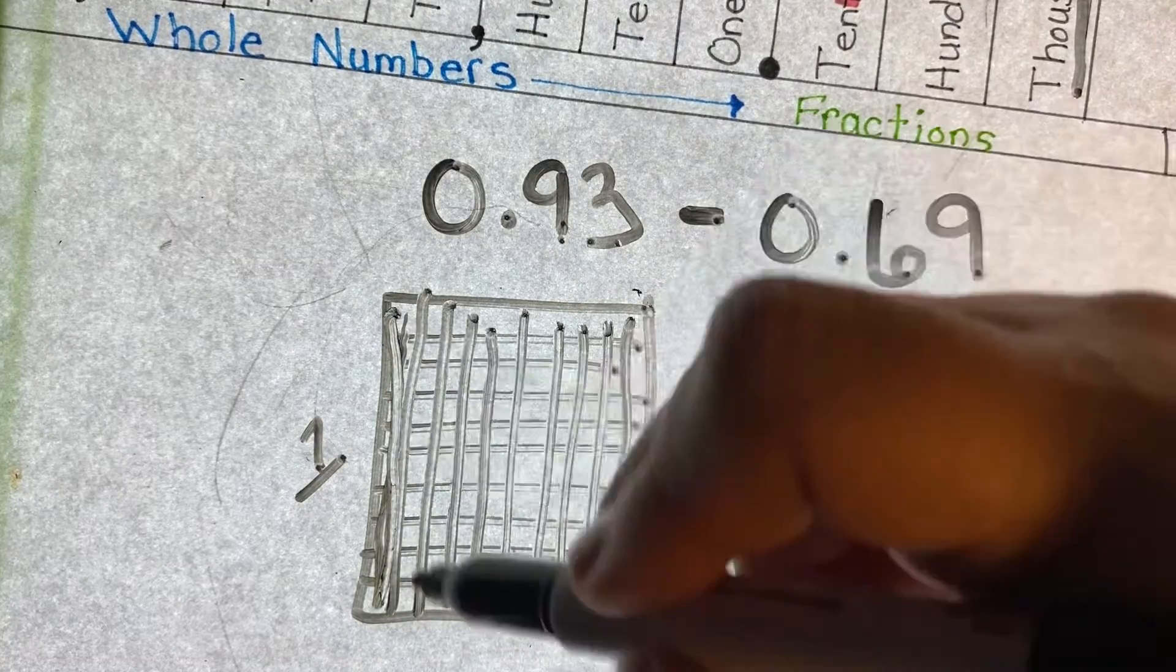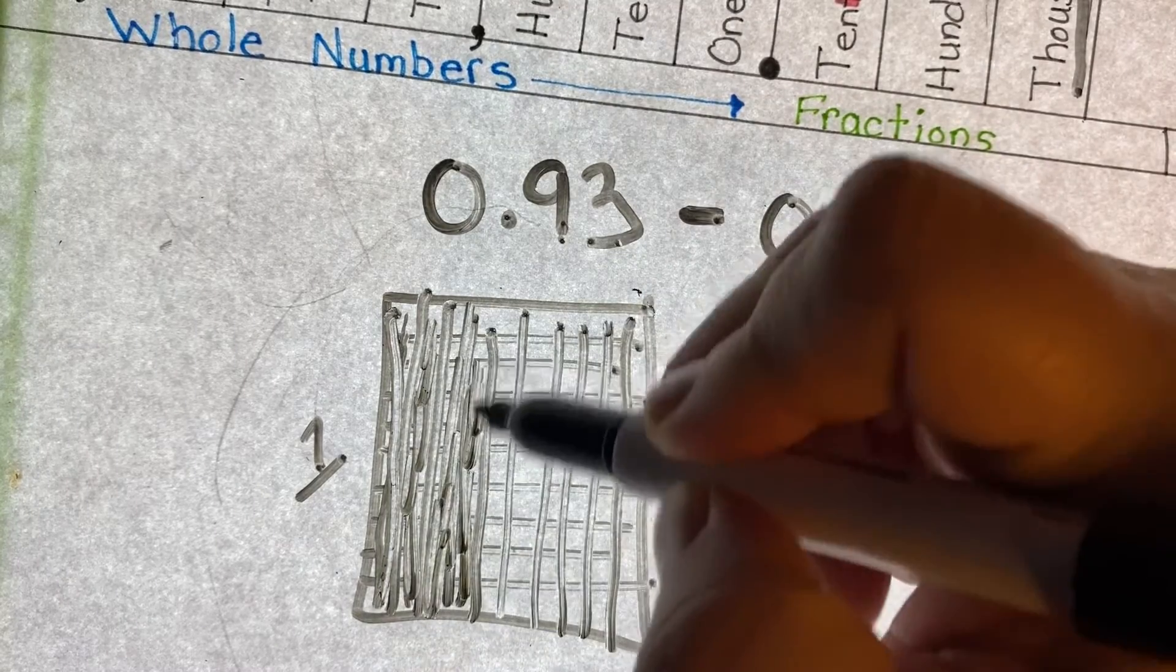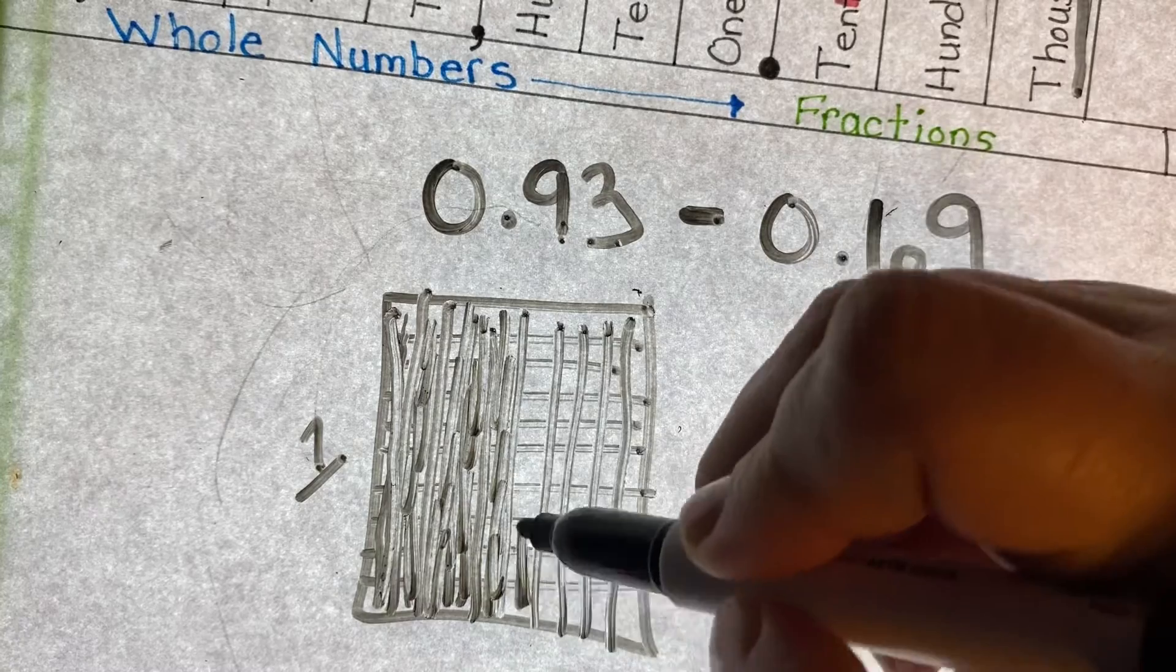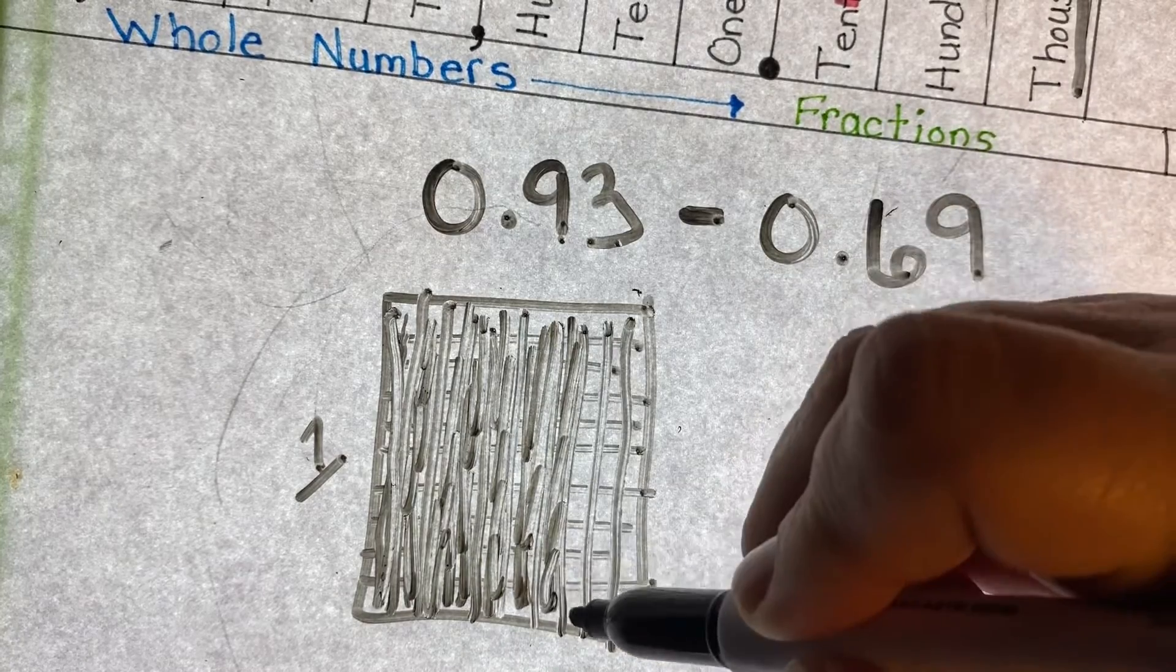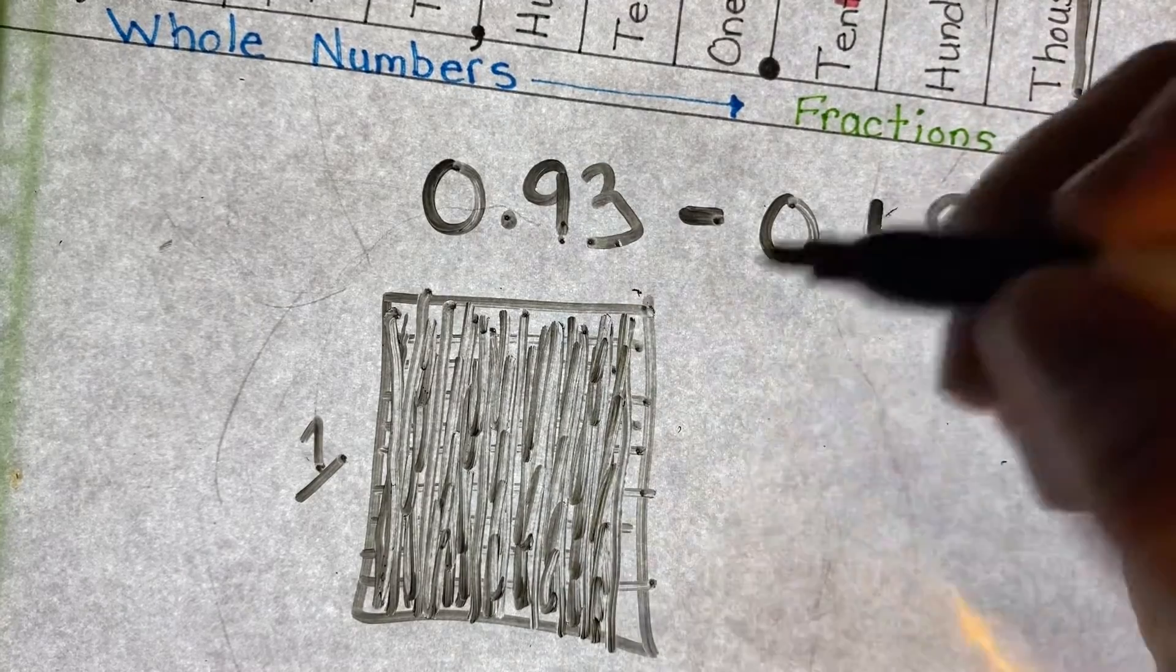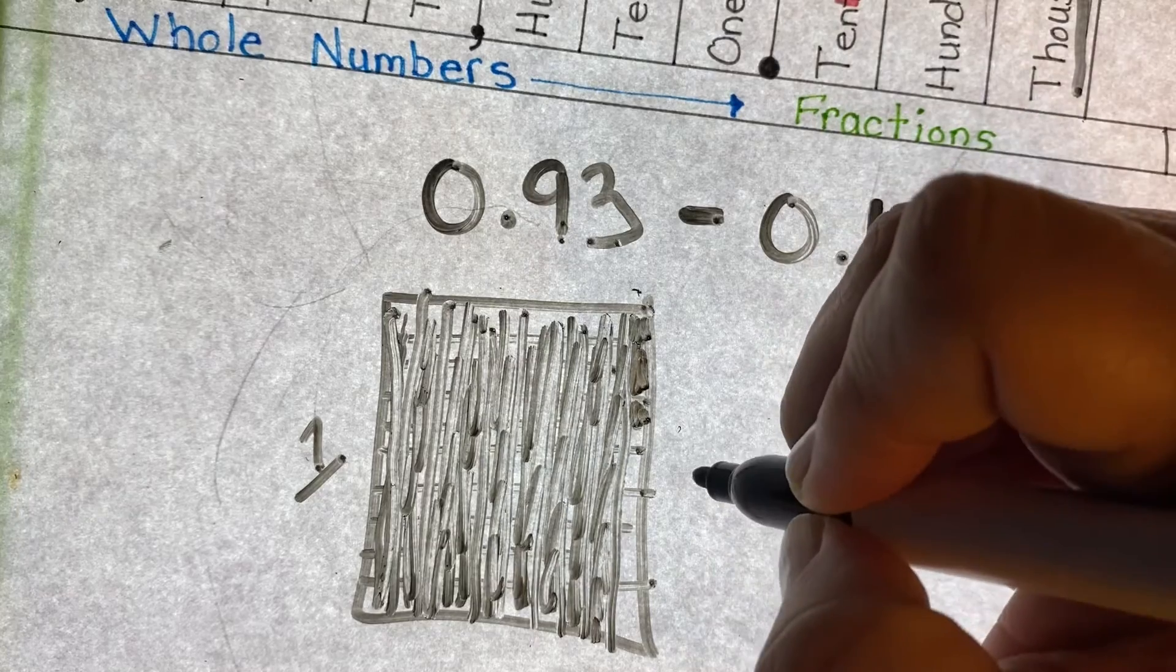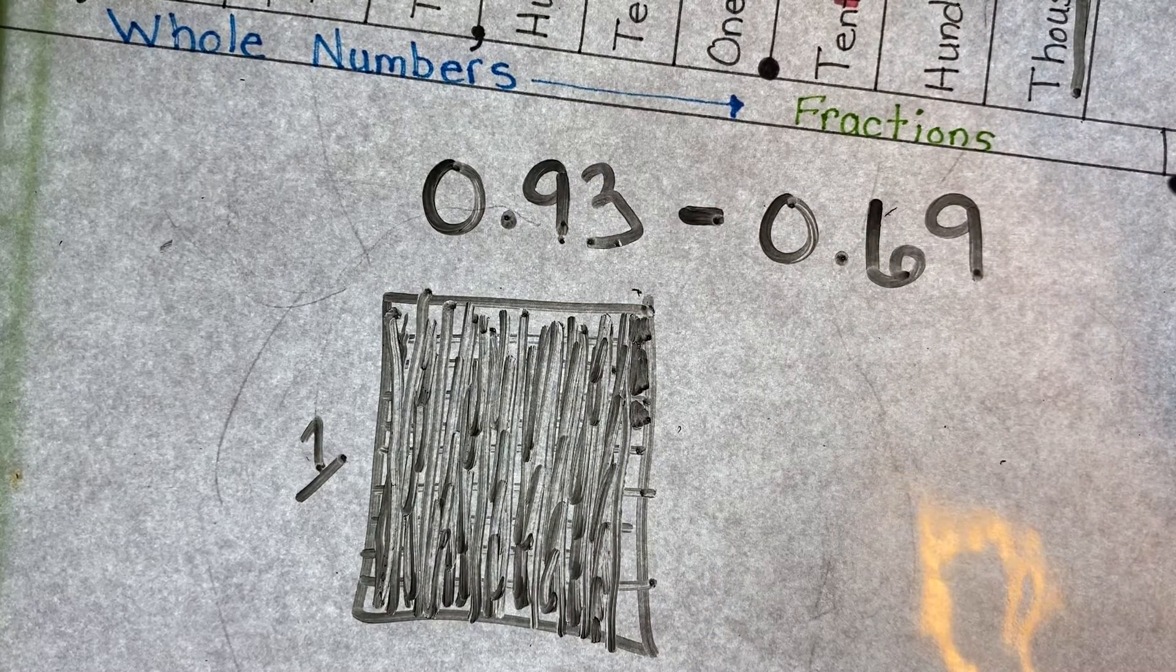So that means I have 10, 20, 30, 40, 50, 60, 70, 80, 90, 91, 92, 93. That's all I have. So I don't have a whole.